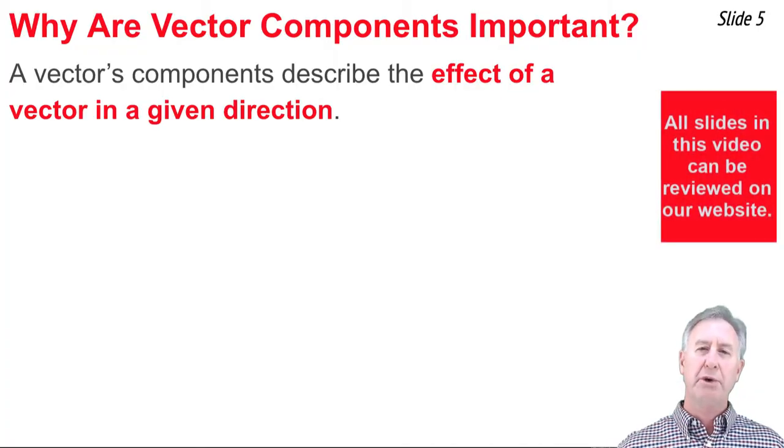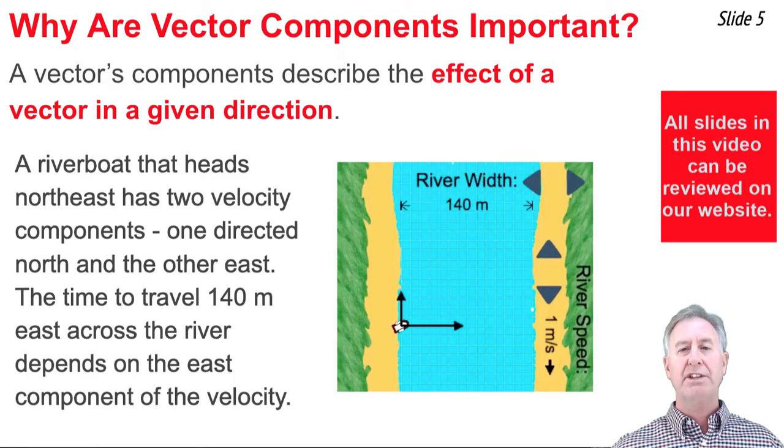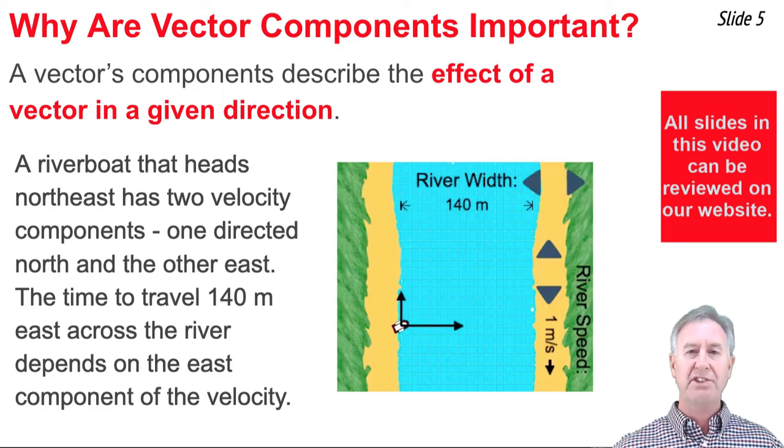What makes a vector component important is that it describes the effect that a vector has in a given direction. For instance, here we see a picture of a boat crossing a river. It's heading northeast, and thus it has a northeast velocity vector. But that velocity vector has two components. One directed eastward that impacts how fast the boat travels from one bank to the opposite bank, and thus affects the time it takes for the boat to travel eastward 140 meters across the river.